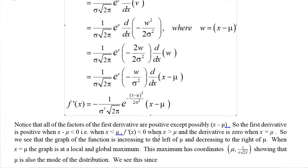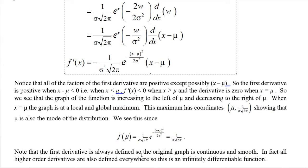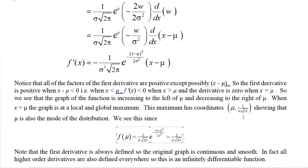What are the coordinates of that maximum? Since the function is increasing then decreasing, the derivative is zero at x = μ — a maximum point. Plugging μ into the original formula: μ minus μ is zero, so e^0 = 1, and the y-coordinate is simply 1 over (σ√(2π)). The maximum always occurs at x = μ (the mean), and its height depends on sigma — a larger sigma gives a lower maximum, and a smaller sigma gives a higher maximum.